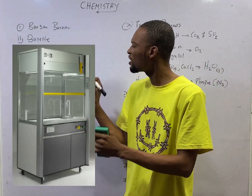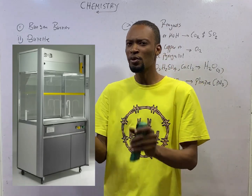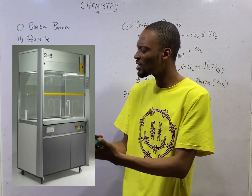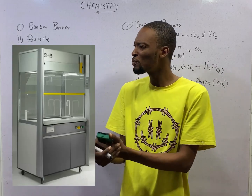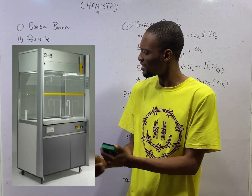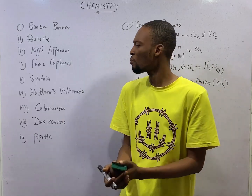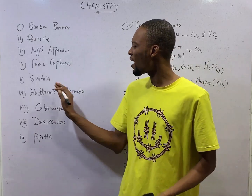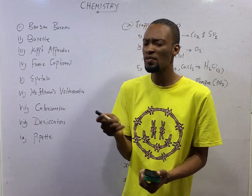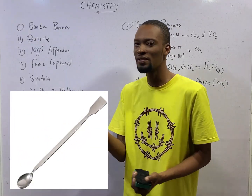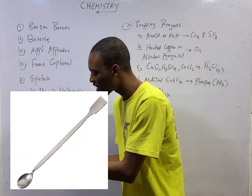Fume cupboard is the chamber for producing poisonous gases in the lab. So to produce poisonous gases in the lab, we use the fume cupboard. Meanwhile, the spatula is used for carrying small amounts of solids from one point to another.